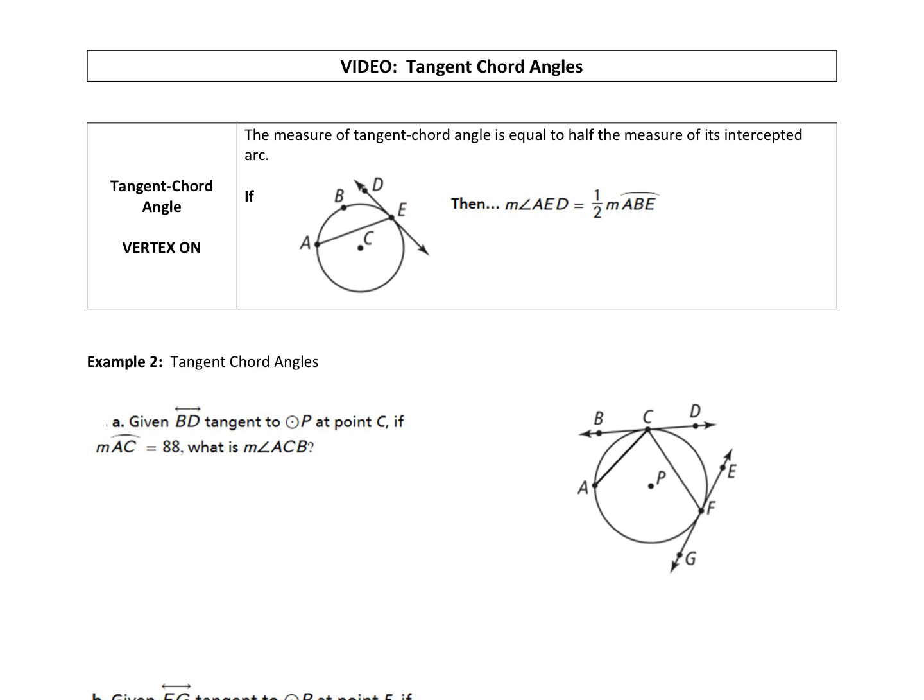So again, the thing we want to take note on is that the vertex is on the circle for a tangent chord angle. So if we have this picture right here, here's our tangent chord, then measure of angle AED, so AED, so the angle, so here's our, we're forming this angle right here. That vertex is on the circle. That's equal to half of the measure of arc ABE, and that arc is going to be kind of the arc contained within. It's going to be half of that arc.